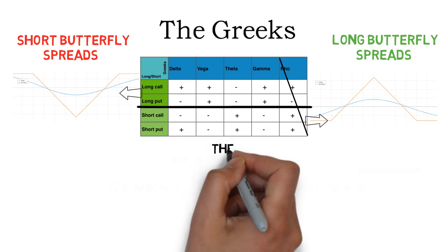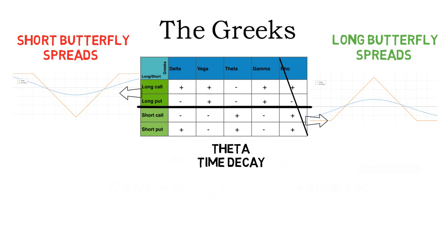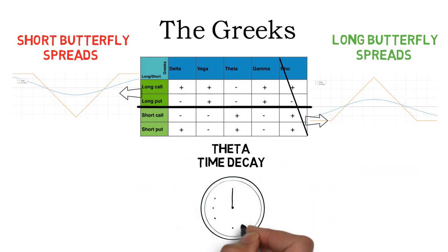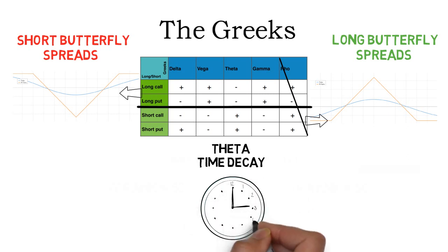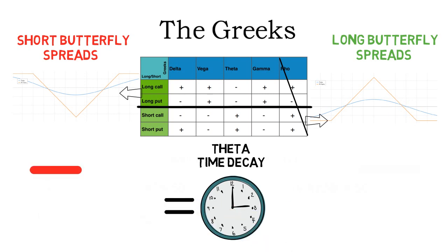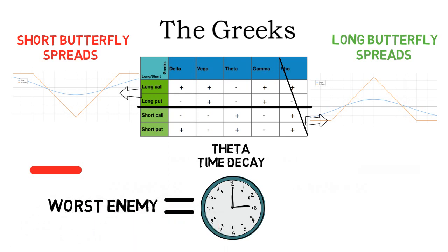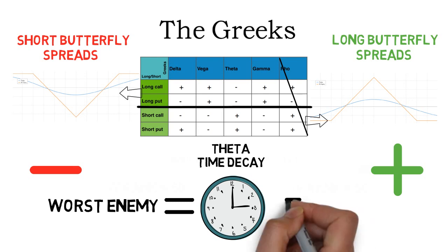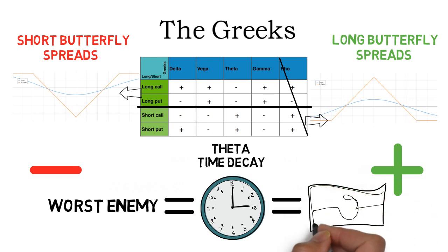The next Greek is theta and it is very important. It measures the change in the options price for time passing by. A plus means that the position gains some value every single day. The amount that an option loses or gains increases the closer the option is to expiration. Therefore, time is the worst enemy of short butterfly spreads, as the underlying price has less and less time to move outside of the losing range. This is the other way around for long butterfly spreads, as the price already is in the profitable range right after entry.